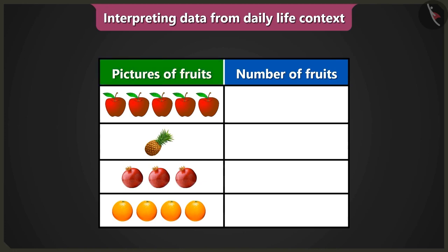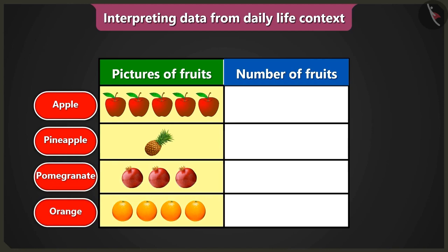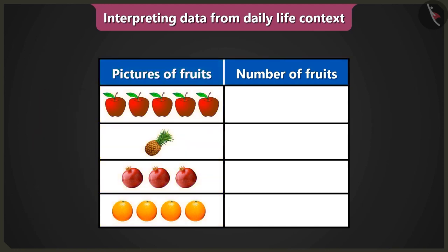Look. Which pictures are there in the column of fruits in the table? There are pictures of apple, pineapple, pomegranate and orange. Now have you understood that the data given is about which fruits? But how will I know the number of fruits without counting them? It is easy. How many pictures of apples are given in this table? There are five pictures of apples. So we have to write the number of apples — five — in the column of number of fruits.